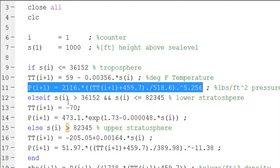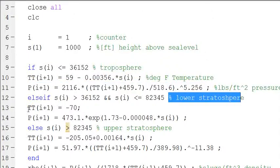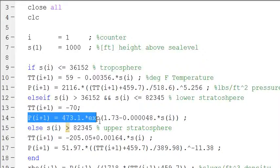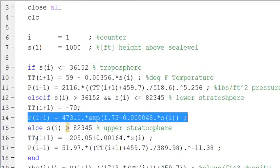Else if, if s(i) is greater than thirty-six thousand feet and change, and s(i) is less than or equal to eighty-two thousand and change, we're going to be in the upper stratosphere, and we're going to set the temperature equal to something, and the pressure is going to be calculated using this equation.